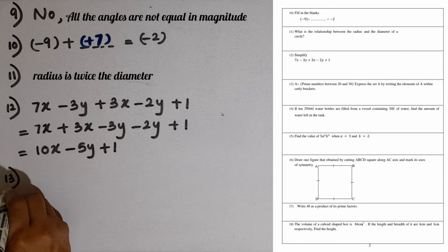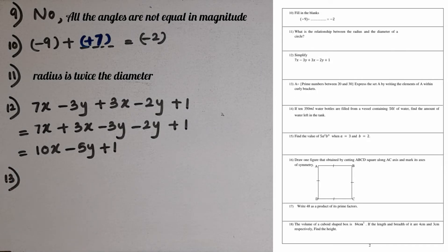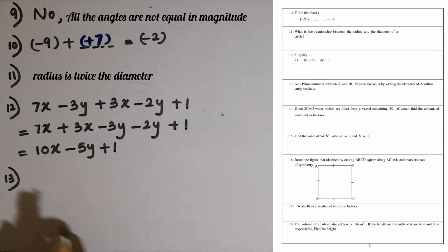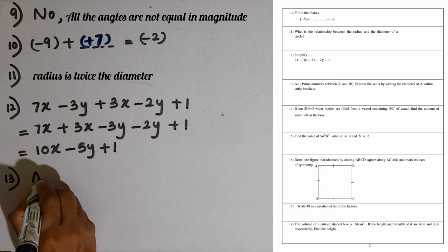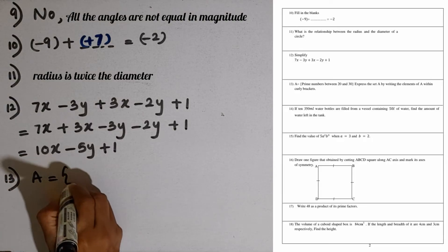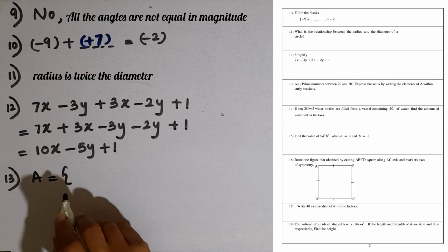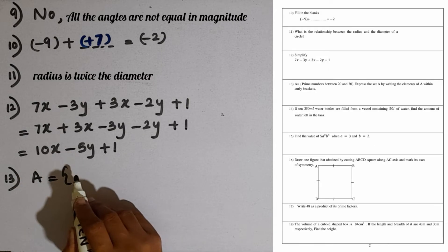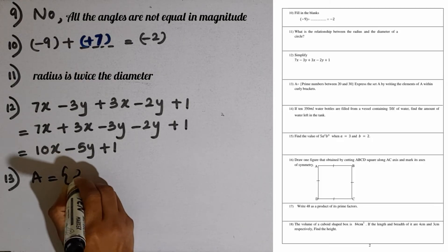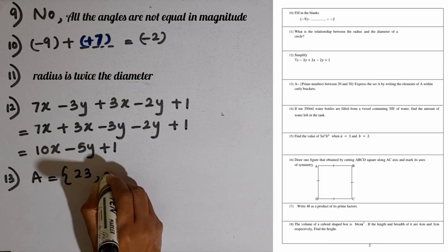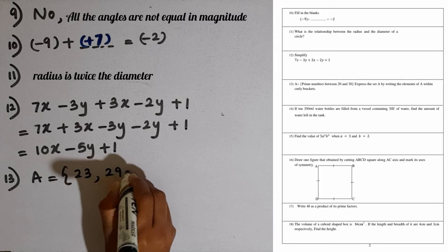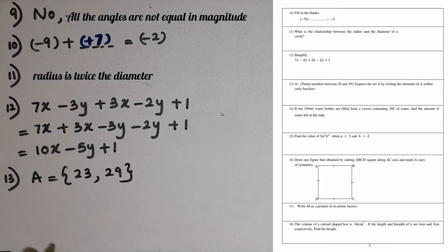Question number 13. Set A is given as prime numbers between 20 and 30. Express the set A by writing the elements within curly brackets. The prime numbers between 20 and 30 are 23 and 29. Only these are prime numbers between 20 and 30.